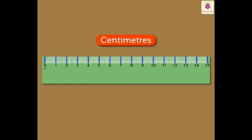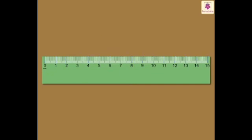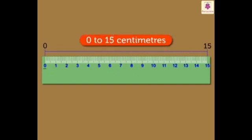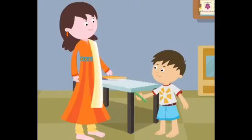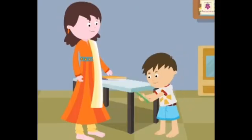These markings indicate the centimetres. We can measure the length of any object in centimetres. Here, the numbers 0 to 15 show 0 to 15 centimetres. So these show the centimetres.